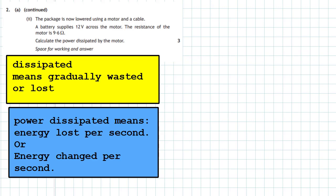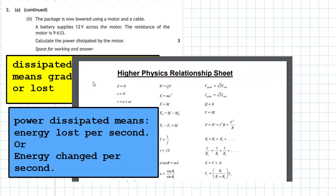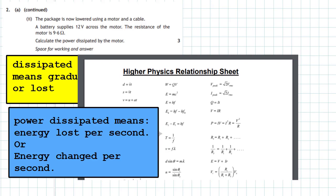The electrical energy supplied to the motor is changed into movement energy, but not all of it — some has changed into heat and sound as well. So what we want to find is the power dissipated by the motor. We go to our Higher Physics relations sheet and look for the power equations. We have P = VI, P = I²R, or P = V²/R. Since we have voltage and resistance, we use P = V²/R.